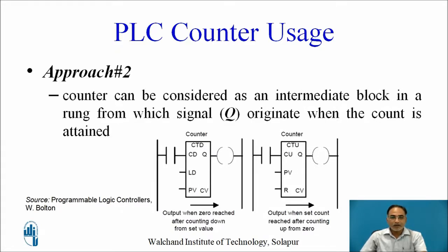The second approach: a counter can be considered as an intermediate block in a rung from which signal Q originates when the count is attained. A switch is used through which pulses are applied to the down counter. For the up counter, a switch applies input pulses. The output Q gets energized when 0 is reached after counting down from the set value for a down counter, or when the set count is reached after counting up from 0 for an up counter.